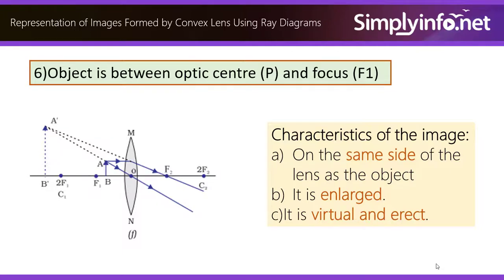Object is between optic center P and focus F1. On the same side of the lens as the object, it is enlarged, it is virtual and erect.